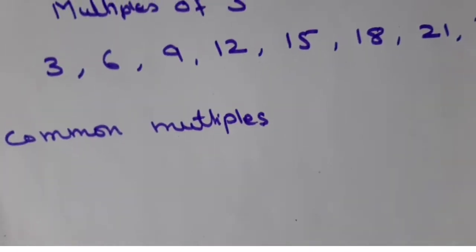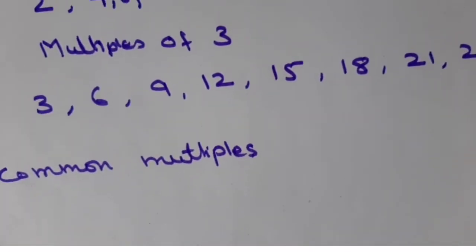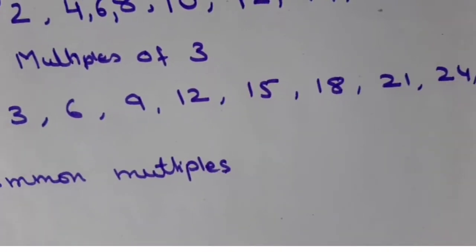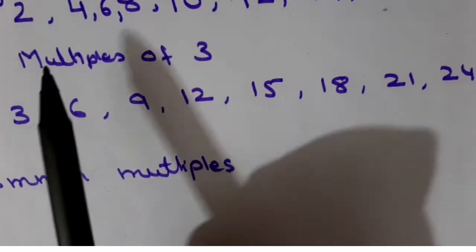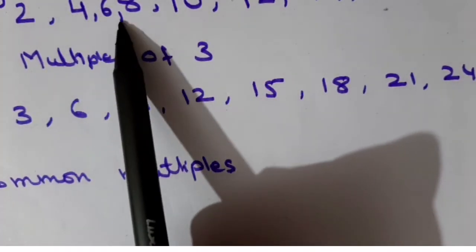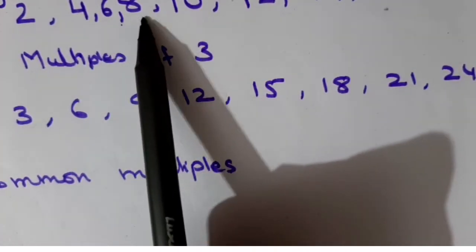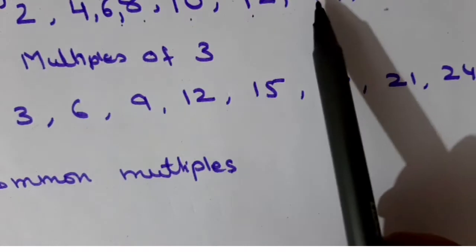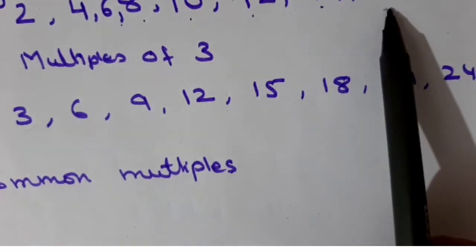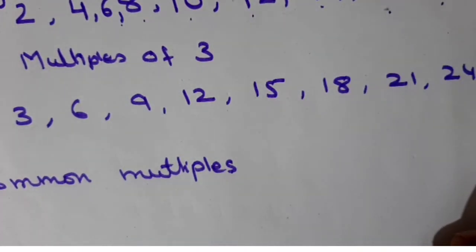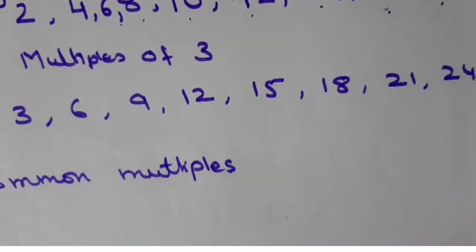See, first I have written the first ten multiples of two. The multiples of two are: 2, 4, 6, 8, 10, 12, 14, 16, 18 and 20.